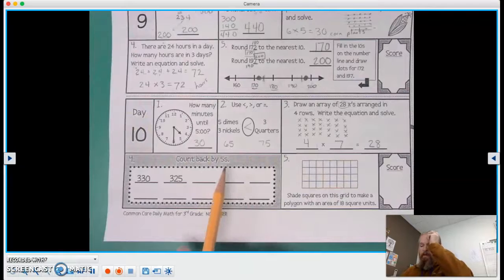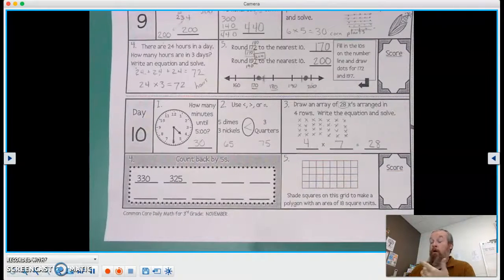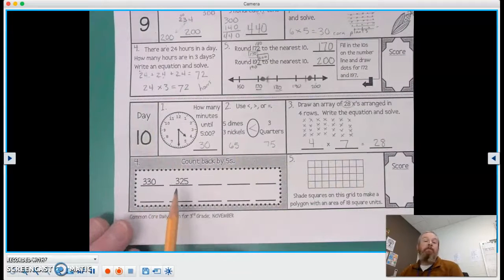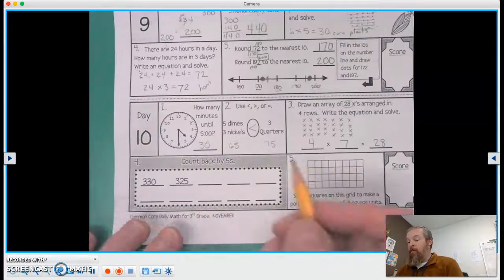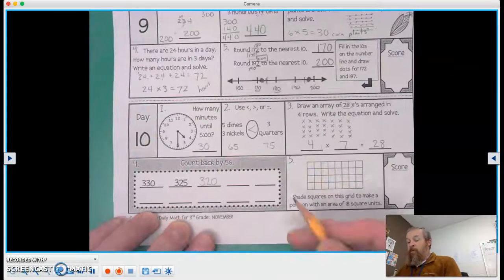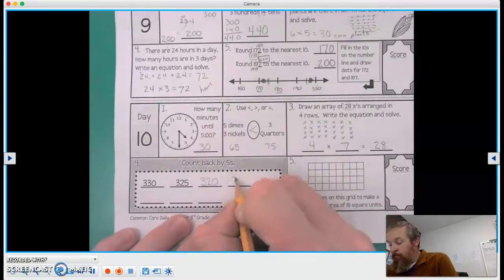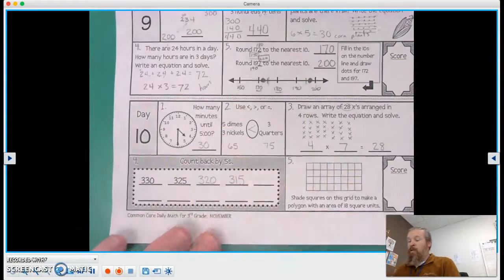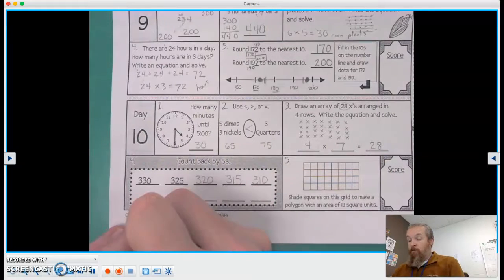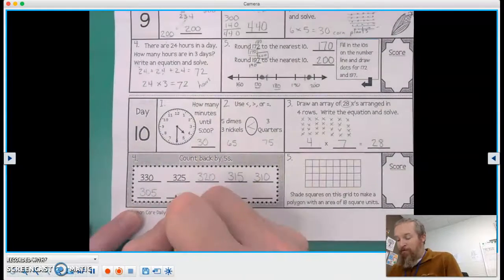Now this one says count back by 5, so we can't quite do the tens trick, can we? We're really just counting by ones. So we're at 330, 325. If we drop back 5 again, we are at 320. Drop another 5, 315. And another 5, 310. Another 5 would be 305. Another 5 would be 300.